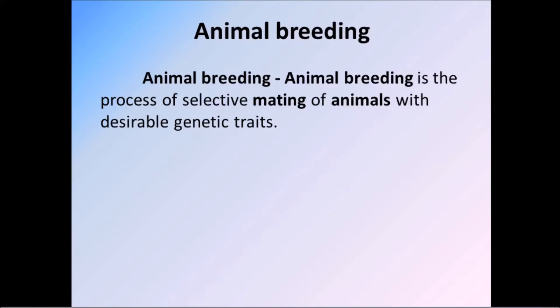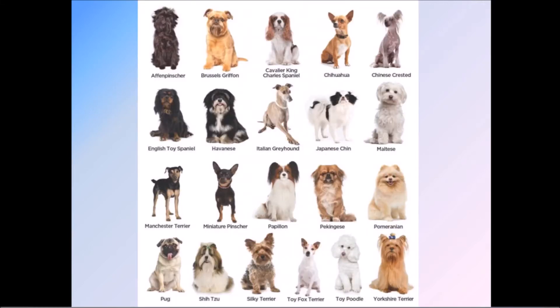Animal breeding. What is animal breeding? Animal breeding is the process of selective mating of animals with desirable genetic traits. So some selective characteristics you can pick and breed those characteristics alone, mating one animal with another. Here you can see a lot of varieties of dogs — only the varieties of dogs.